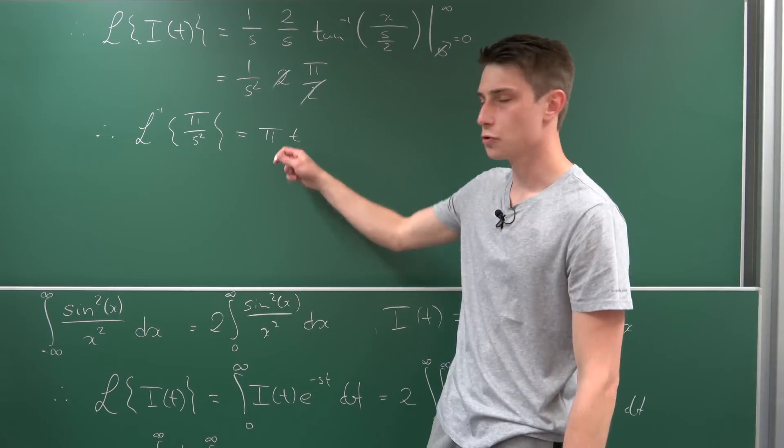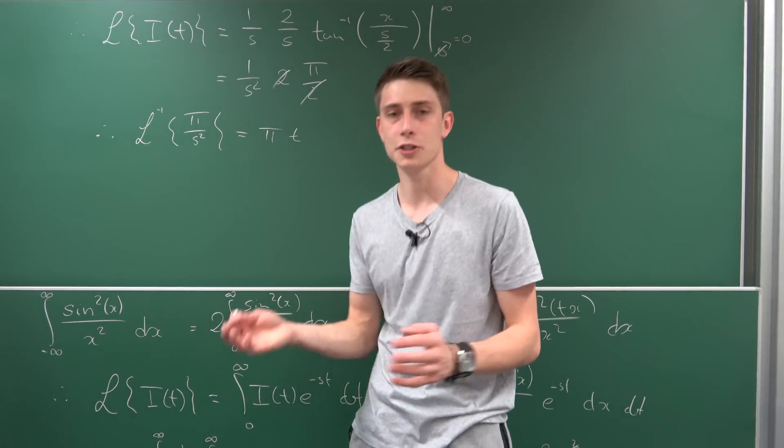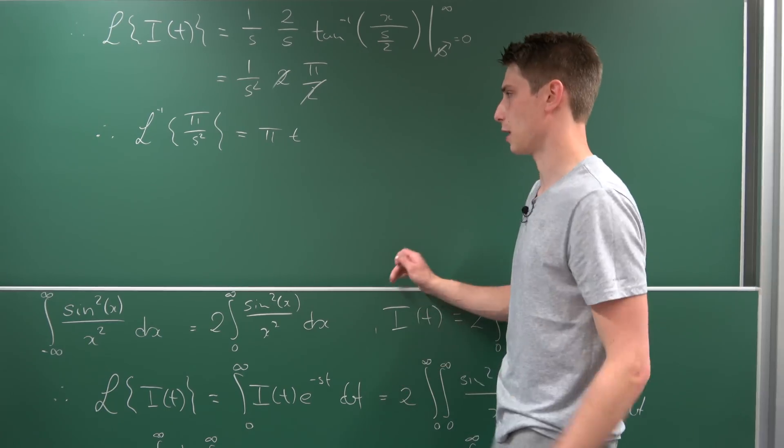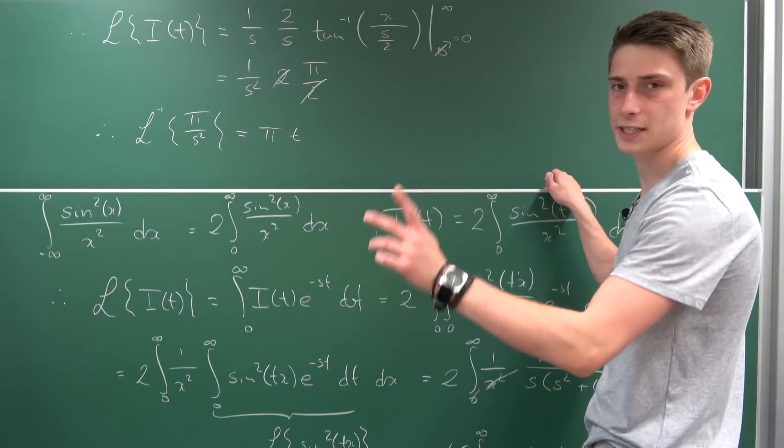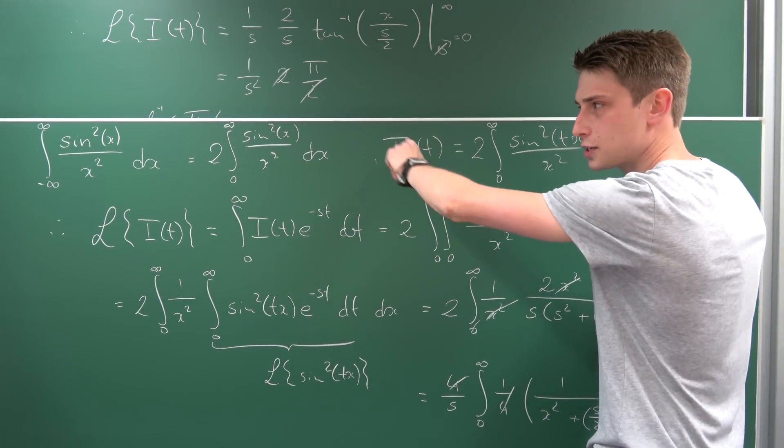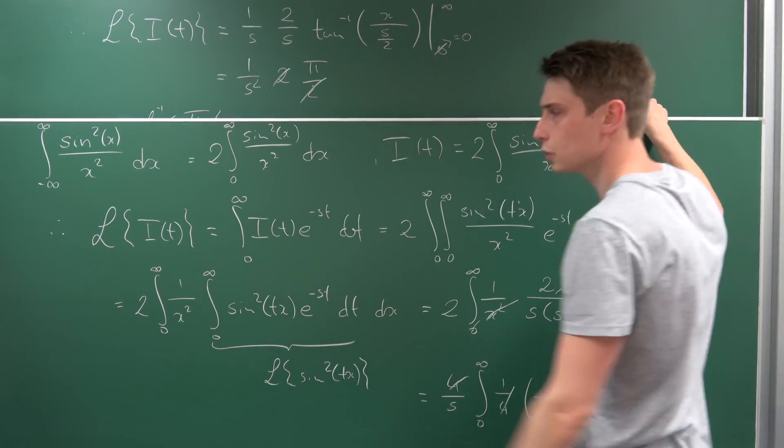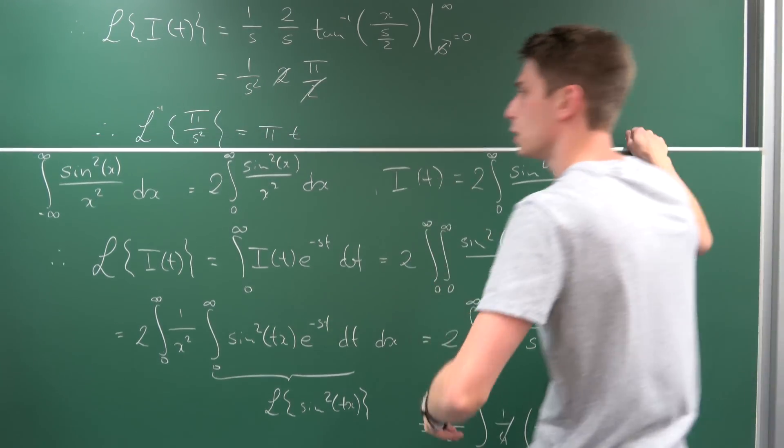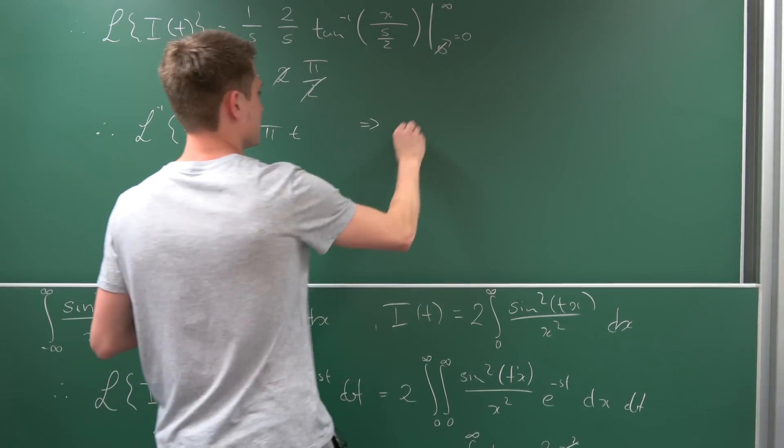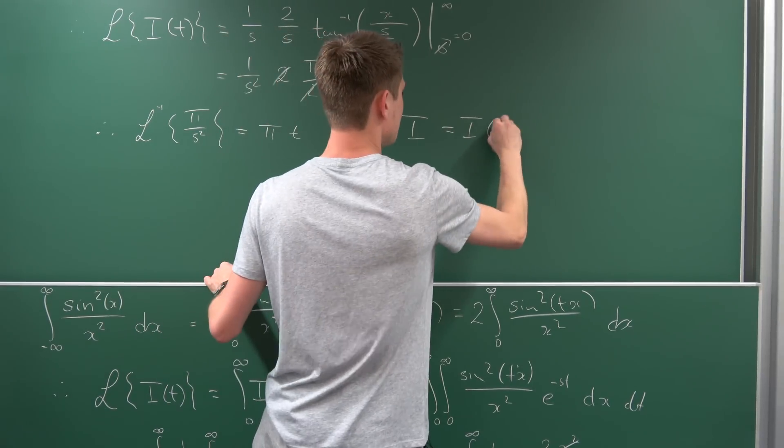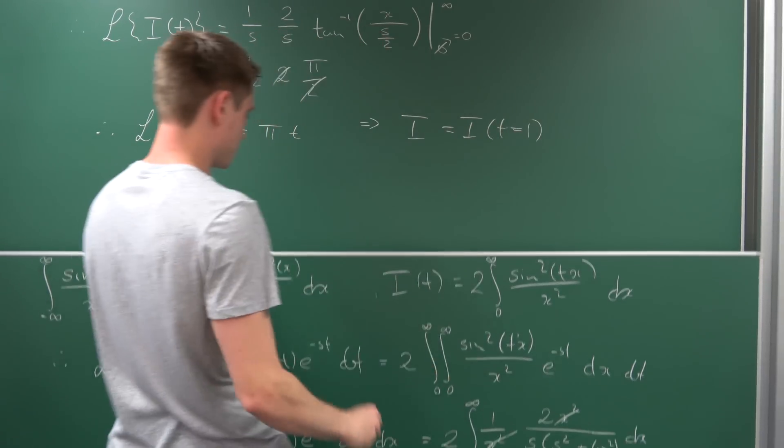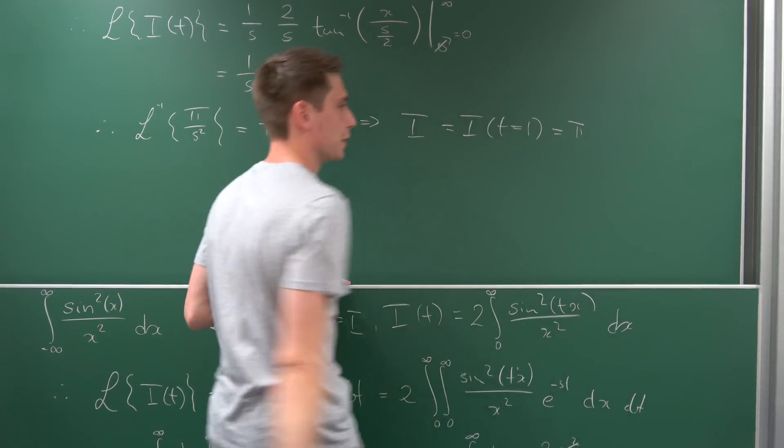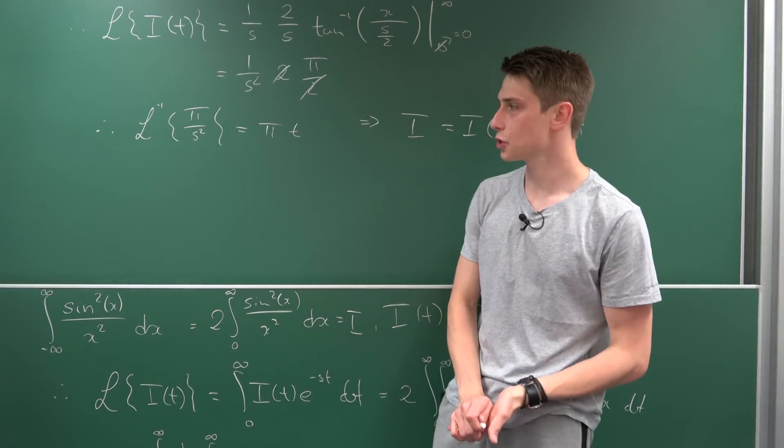Now we have the right solution. Last time something wrong did imply something right - that's mathematics. But this time we're doing everything right. Don't forget this is the solution to I(t). To get the solution to our original integral I, we just need t = 1. So our I is just I(t = 1). And this is just π - we're done. That's the real solution to our problem.